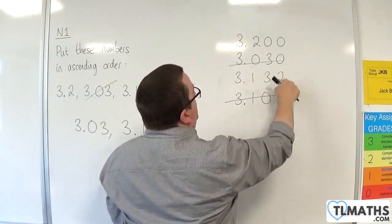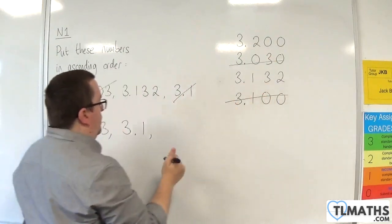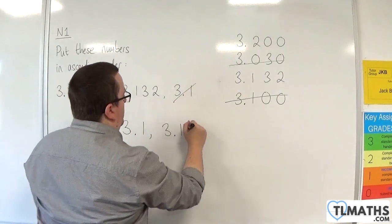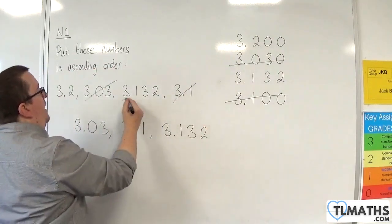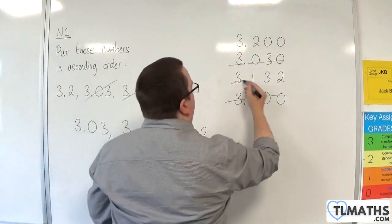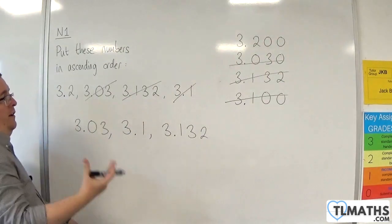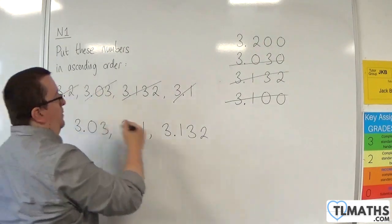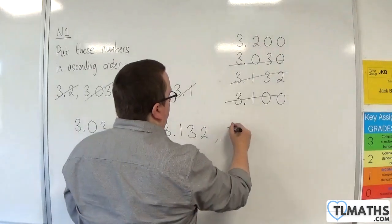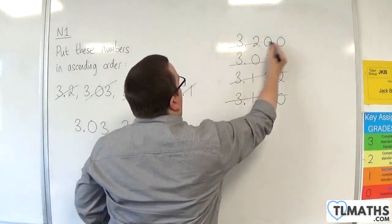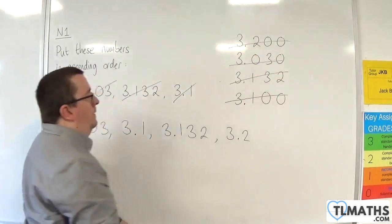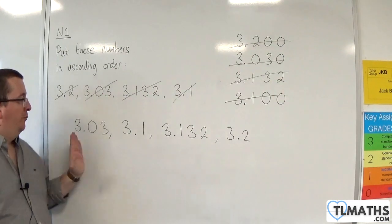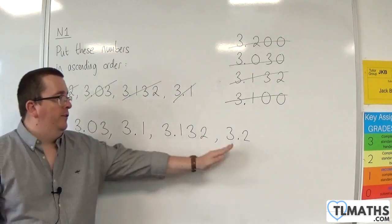Then the next largest will be 3.132, because 132 is less than 200. So 3.132 is next. And so the last one, the largest, has to be 3.2. And now I've put them in order of size, from the smallest to the largest.